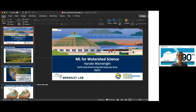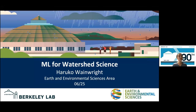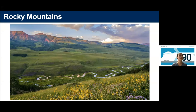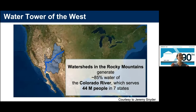I will talk about the application of machine learning for watershed science and water resources. I'm from the Earth and Environmental Sciences area of Berkeley Lab. We are a bunch of scientists working in a beautiful watershed in the Rocky Mountains — with wildflowers, forests, mountains, and stunning views. This is a very important place in the US. We call it the water tower of the West. Watersheds in the Rocky Mountains generate 85% of water in the Colorado River, and the Colorado River serves more than 40 million people in seven states from Arizona to California and Utah.